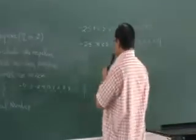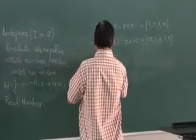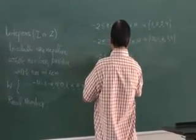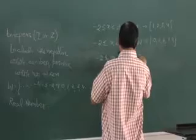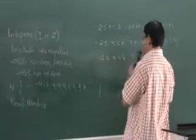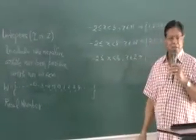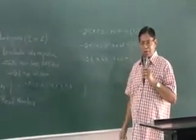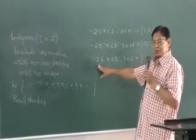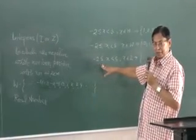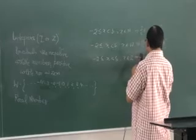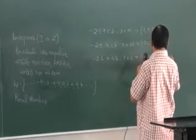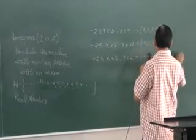If it says X is an integer, so integers are positive whole numbers, negative whole numbers. So minus 2 is included, the equal sign is there. So it will start with minus 2, then minus 1, 0, 1, 2, 3, 4.